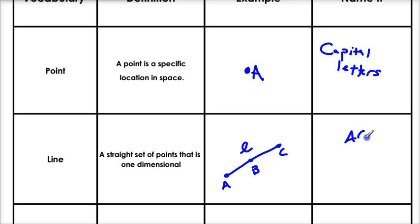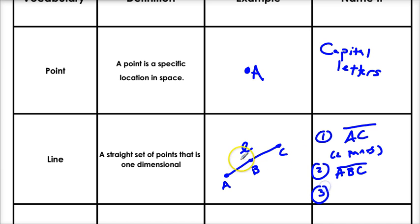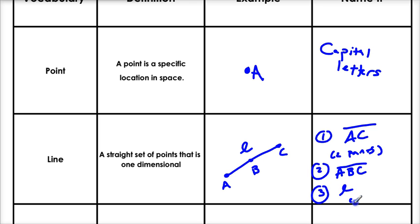The first way we can name this line is by its two endpoints — we can call this AC. That's one way to do it, just using two points. We could also use three points, so we could call this ABC. Or sometimes you can just use a little scripted letter. So this line right here has three names: AC, or ABC, or L. Doesn't matter which one you use, they all mean the same thing.